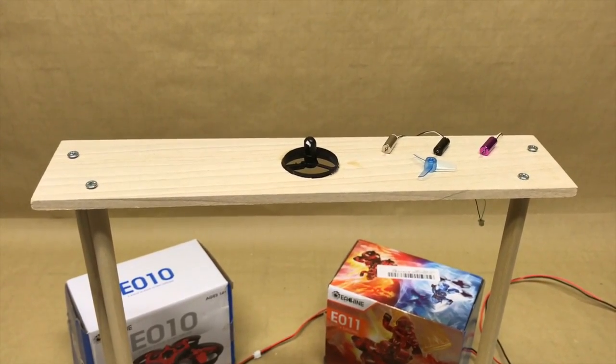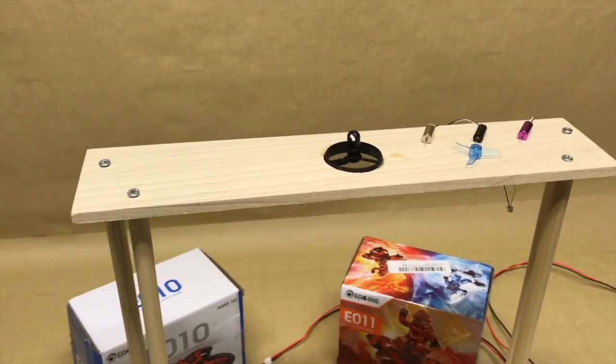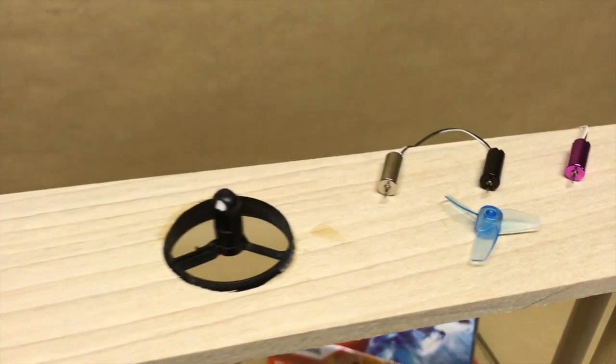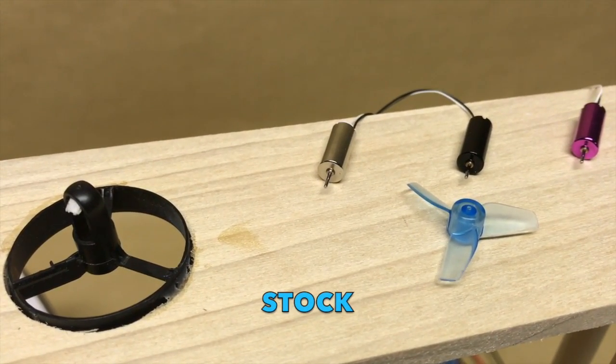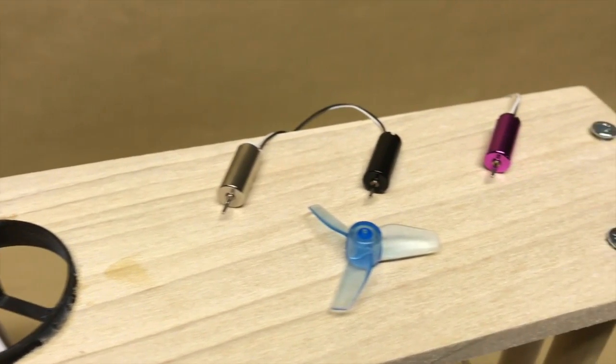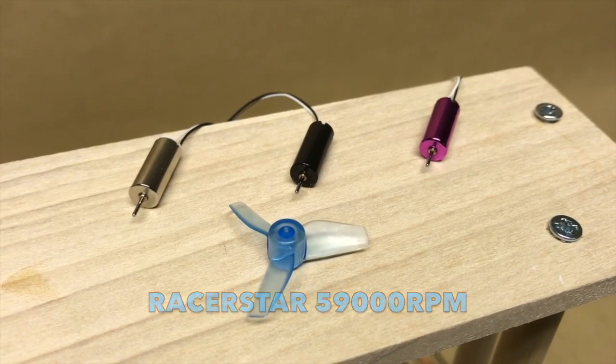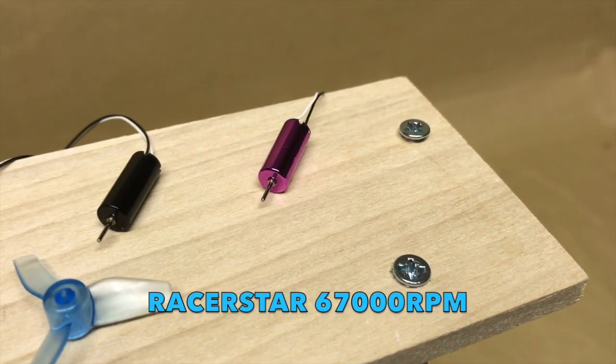So now we'll get down to the reason you're really here, which is to compare the results and thrust tests for these three motors. We'll start with the stock Eachine E010 motor and the Racer Star 59,000 RPM, and then finally the Racer Star 67,000 RPM, which can all be found at banggood.com.